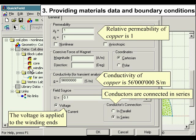Relative permeability of copper is 1. Conductivity of copper is 56 million Siemens per meter. The voltage is applied to the winding ends. Conductors are connected in series.